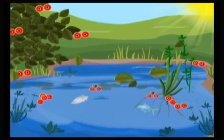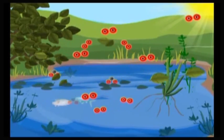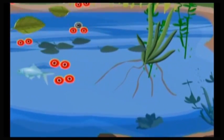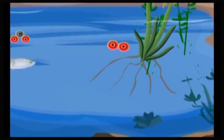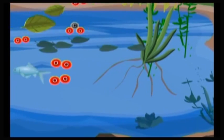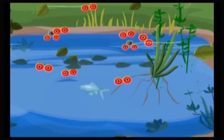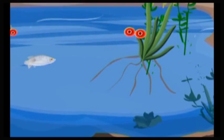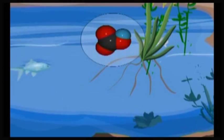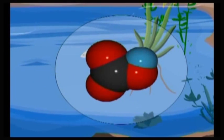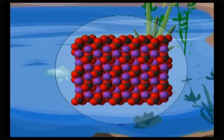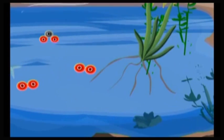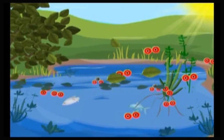Plants and animals use oxygen for respiration and release carbon dioxide into water. Carbon dioxide present in air also dissolves in water and forms bicarbonates and carbonates. The carbonates and dissolved carbon dioxide are used by plants for photosynthesis.